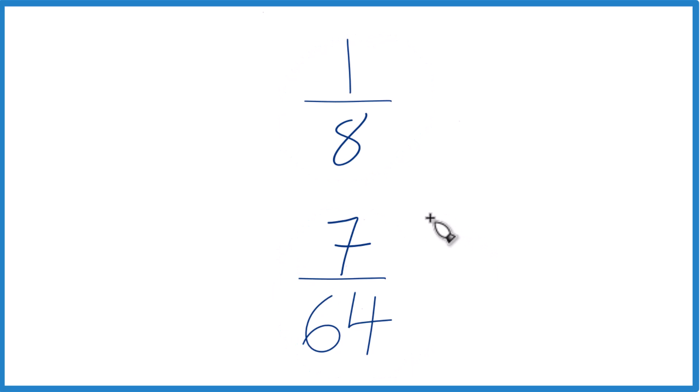You might just be able to reason it out, or you could take a calculator—1 divided by 8 and get a decimal, 7 divided by 64, get a decimal, and then just compare the decimals.